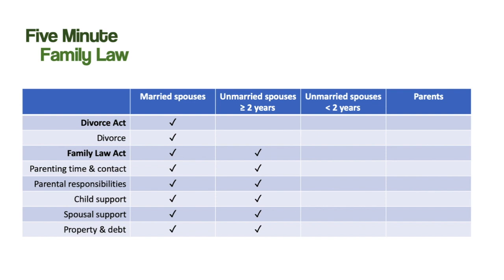Now, if you are that other kind of unmarried spouse — you've lived together with your partner for less than two years and you've had a child with your partner — the Family Law Act applies to you, but you're only able to ask for orders about parenting after separation, the payment of child support, and the payment of spousal support. And if you are a parent and don't qualify as an unmarried spouse or as a married spouse, only the Family Law Act applies to you, and you're only allowed to ask for orders about parenting after separation and the payment of child support.